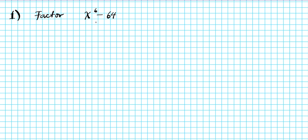What we have here is a sixth degree binomial expression and we're to factor this expression completely. Any time you're asked to factor any expression, you ask yourself: is there a greatest common factor that can be extracted from the terms provided? We can clearly see that there's no greatest common factor here.